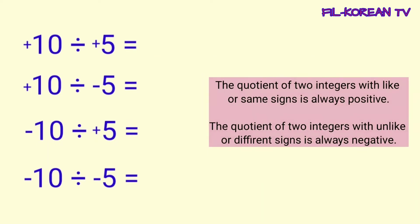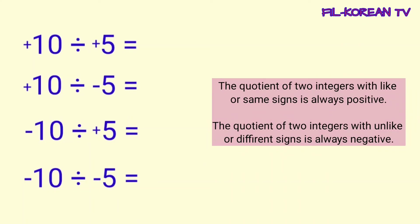Just remember, the quotient of two integers with like or same signs is always positive. And the quotient of two integers with unlike or different signs is always negative.